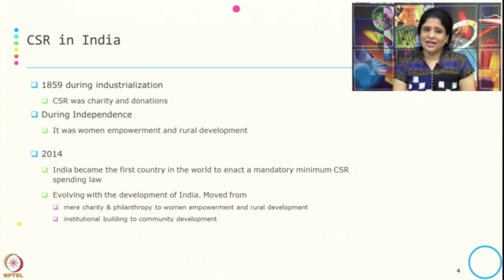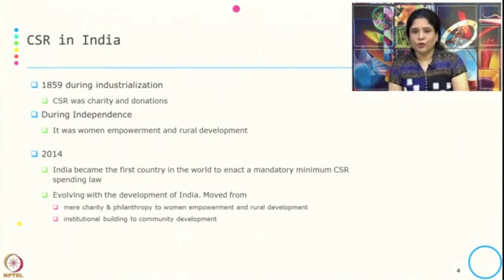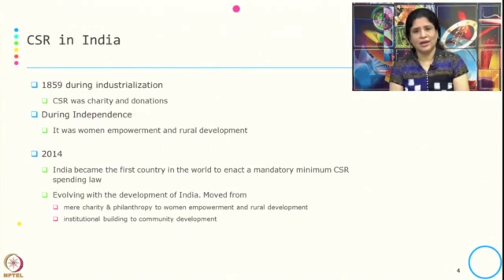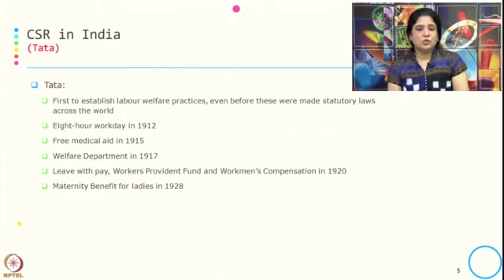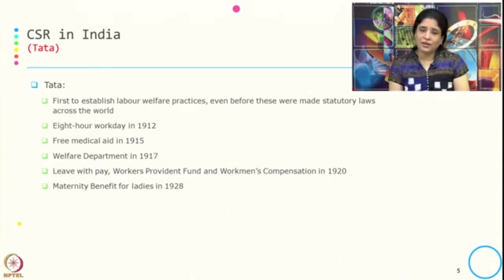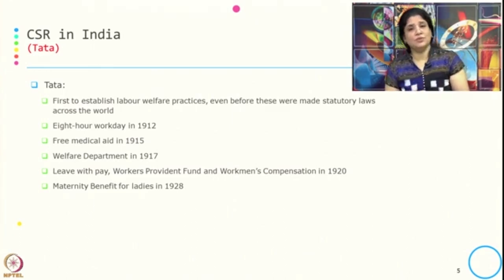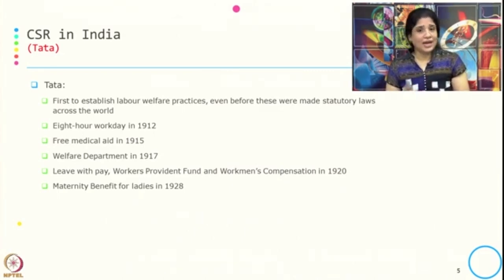Over a period of time CSR in India has also evolved with the development of India, moving from charity philanthropy to women empowerment and rural development and many more focus areas, and from institutional building to community development. When we talk about CSR, the first name that comes is the Tata group — they were possibly the first ones doing activities that should be part of CSR even before the term was defined or operationalized.